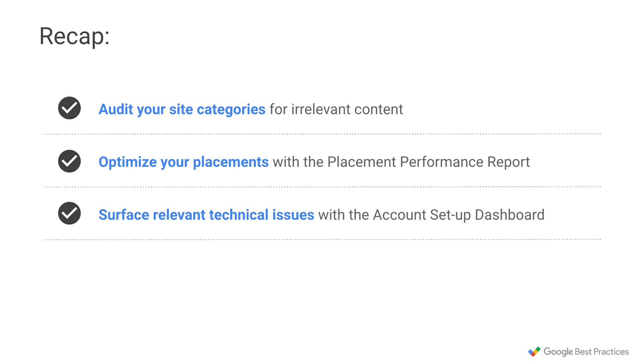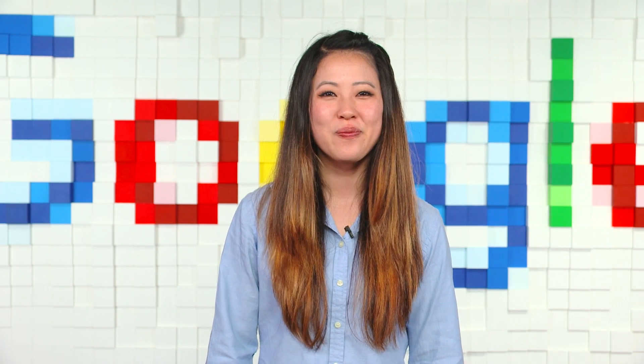So let's recap on how to optimize your display performance. First, audit your site categories for irrelevant content. Second, optimize your placements with the placement performance report. Third, surface relevant technical issues with the account setup dashboard. This brings us to the end of our video series for Google Display Network best practices. I hope you enjoyed this and can apply these tips to your campaigns. Signing out, Tran.